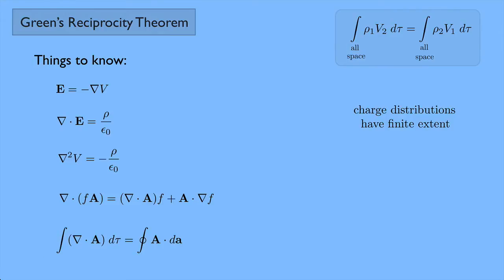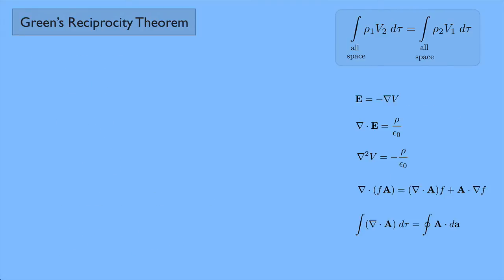One more thing: charge distributions that have finite extent — which is what we'll have for Green's reciprocity theorem — imply that the potential goes to zero at infinity. That will come up in the proof. Now I think we're ready to go ahead and prove this. On the right I have Green's reciprocity theorem and all of the tools we're going to use. To start off, I'm going to look at the integral of E1 dotted with E2.